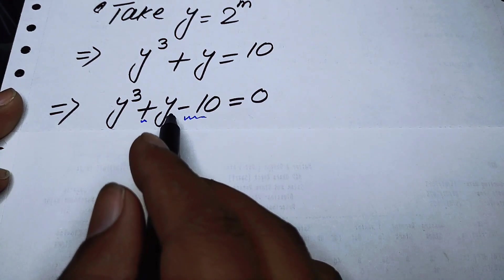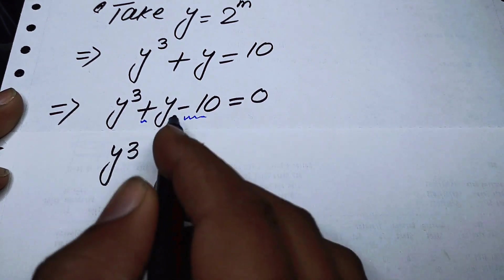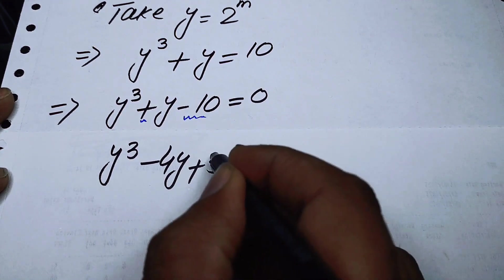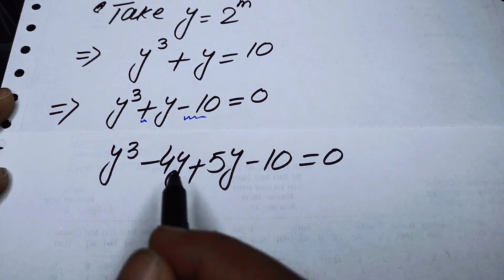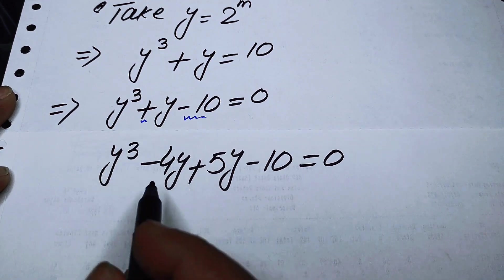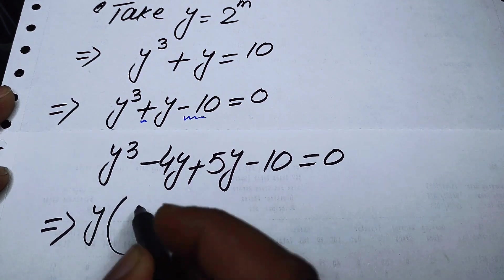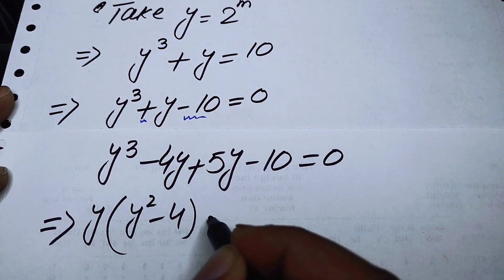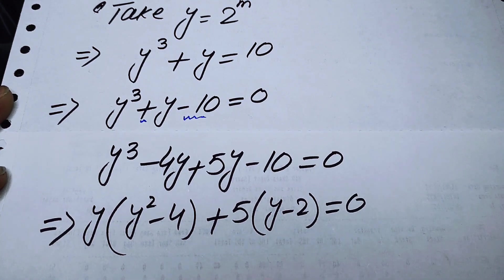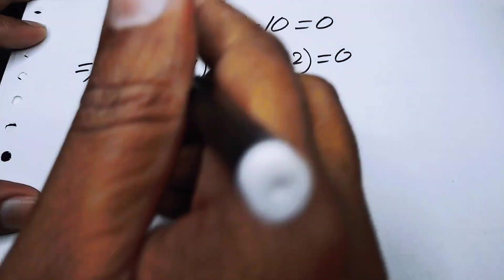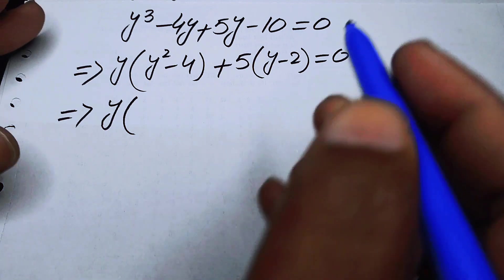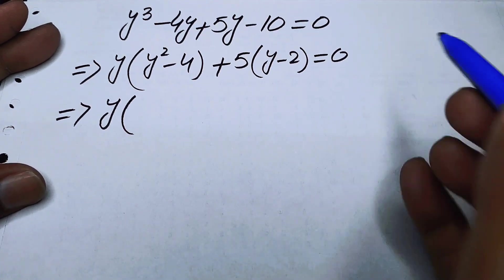Now we will make the factors of this cubic equation. We can write y cubed plus y minus 10 as y cubed minus 4y plus 5y minus 10 is equal to 0, since adding minus 4 and plus 5 gives plus y. We then take common y from the first two terms to get y squared minus 4, and take common 5 from the last two terms to get y minus 2 is equal to 0.